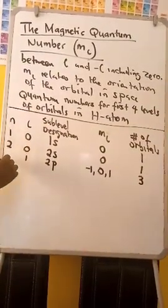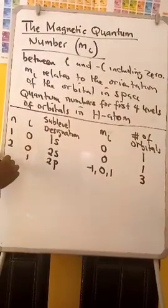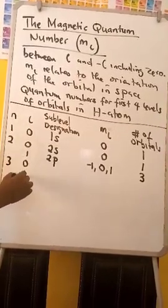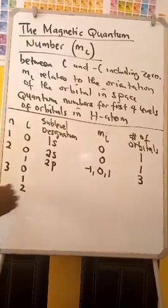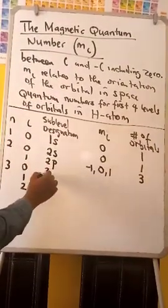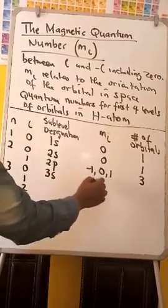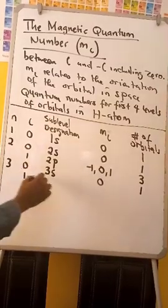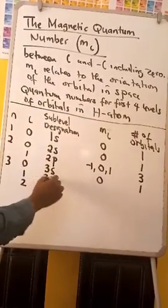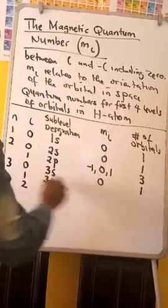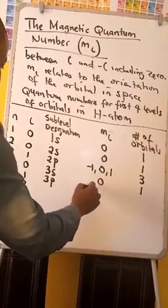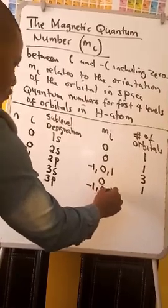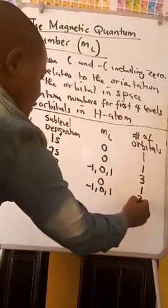When N is equal to 3, L has values 0, 1, and 2. When L is 0, this is 3S; ML is 0; number of orbitals: 1. When L is 1, this is 3P; ML will have negative 1, 0, and 1; number of orbitals: 3.